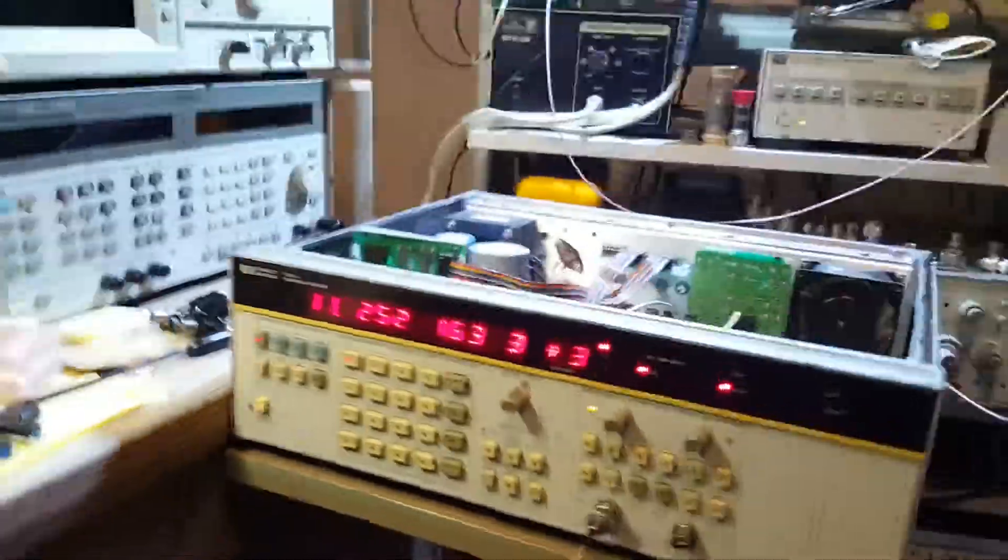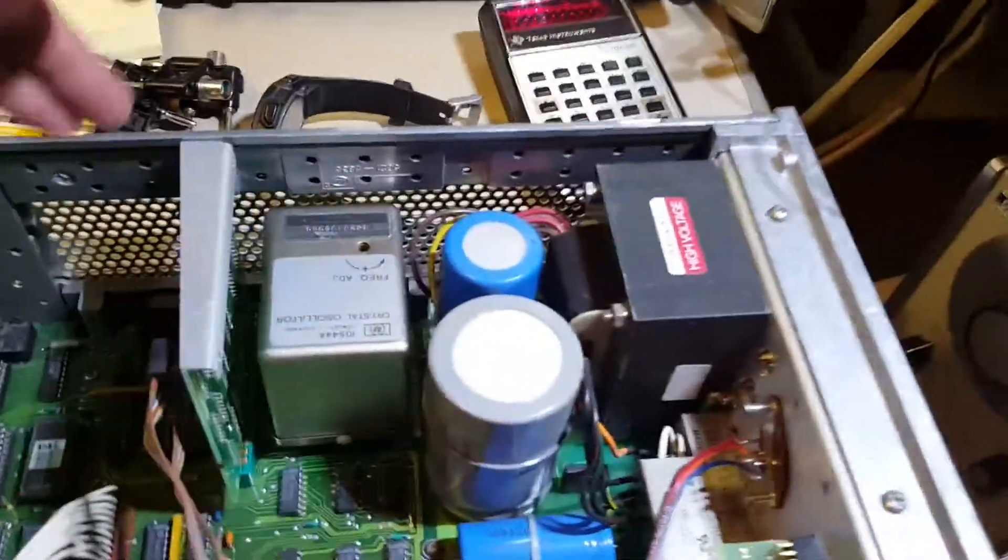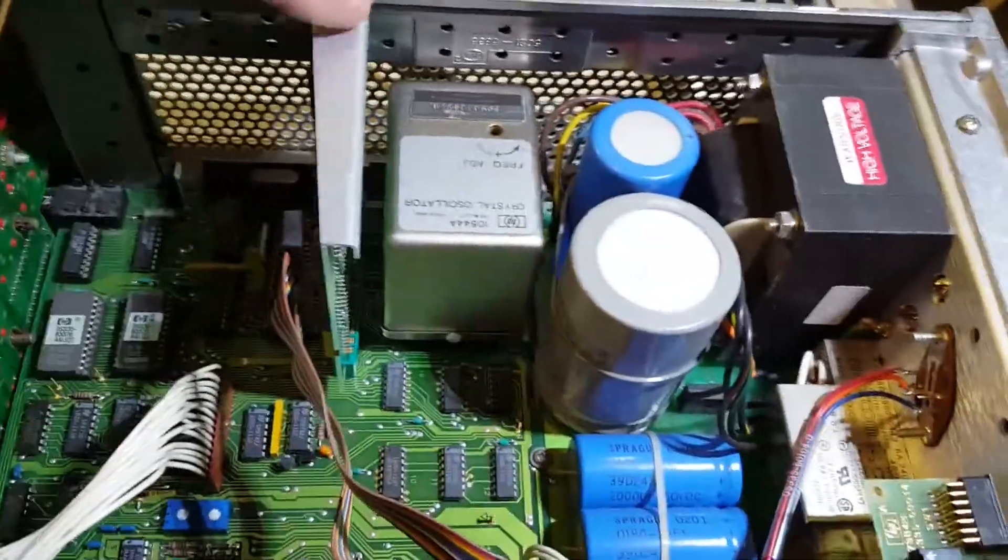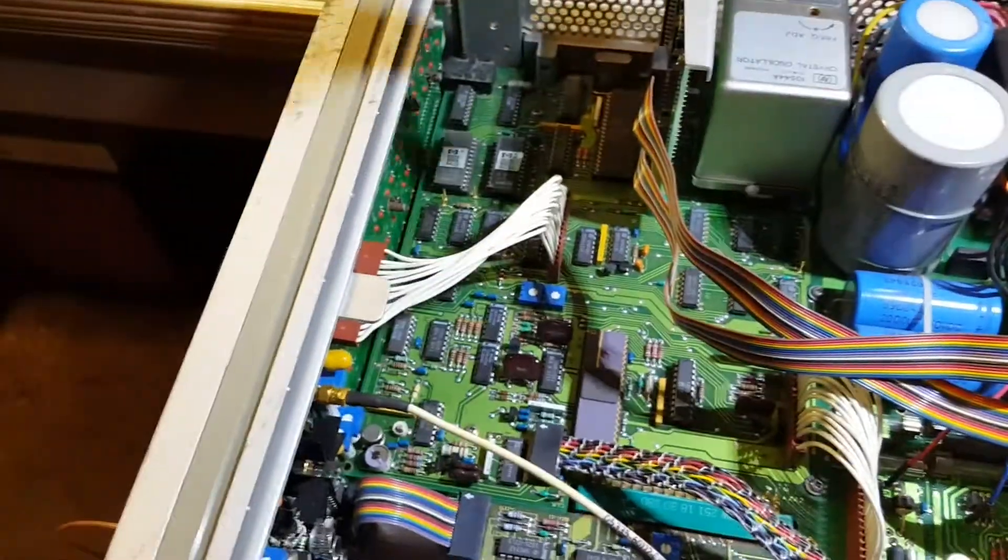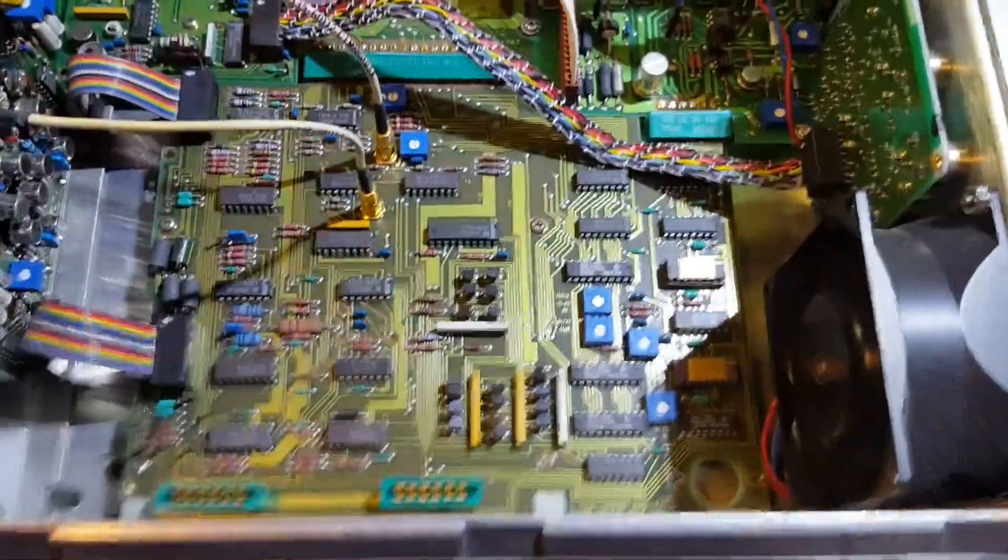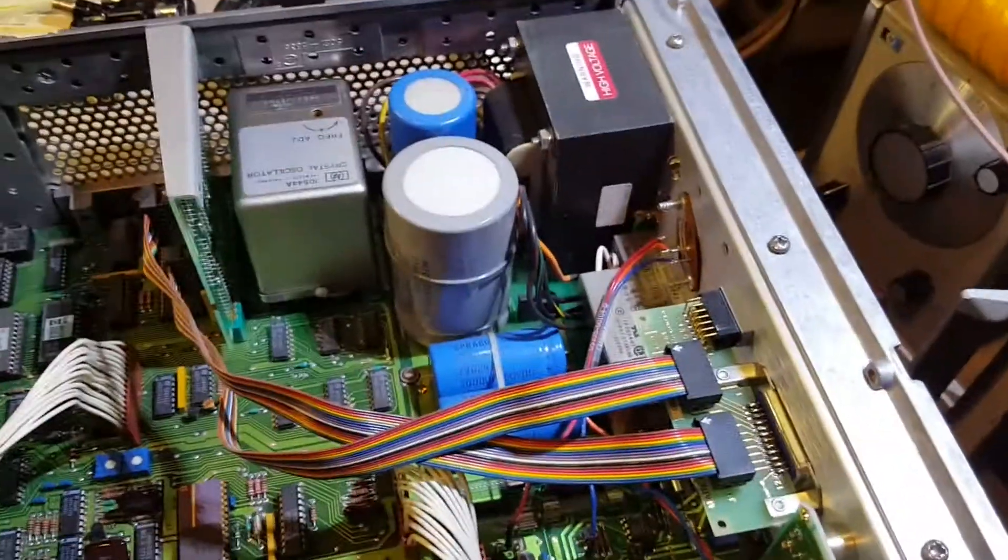Alright, here we are, ready to finish buttoning this thing up. Well, here's a look on the inside of this counter. There's the oven I installed. This here is the HP IB card. Got the main motherboard there. The channel board there. Power supply back here. And all the other back panel goodies.